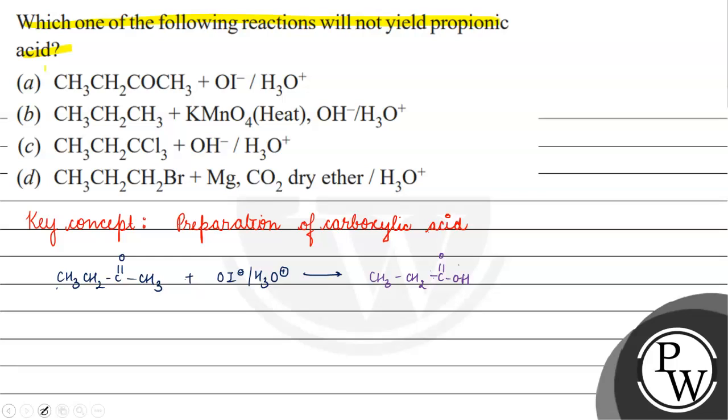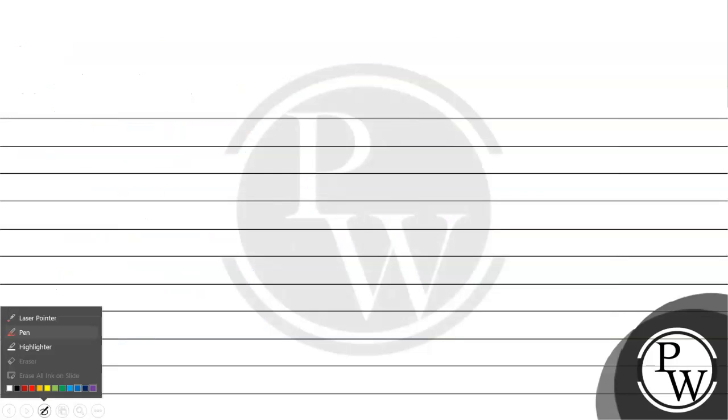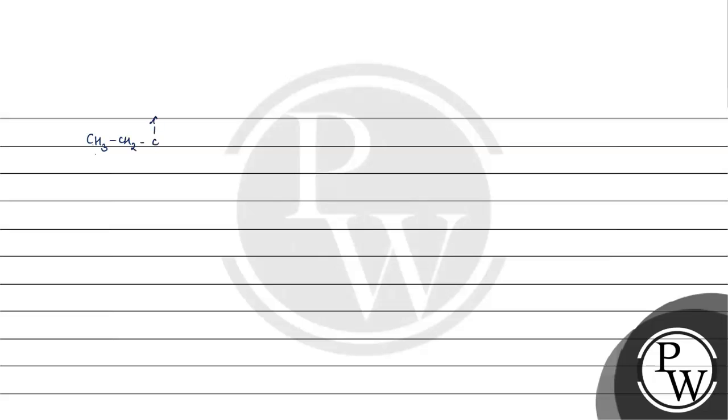We will form propionic acid. Next we have CH3 CH2 CH3 in the presence of KMnO4. KMnO4 is a strong oxidizing agent. What will it show? Complete oxidation. We will get an acid.